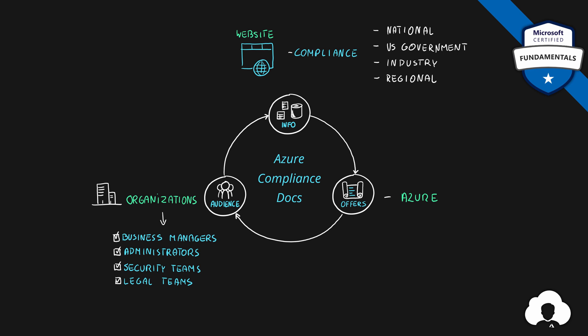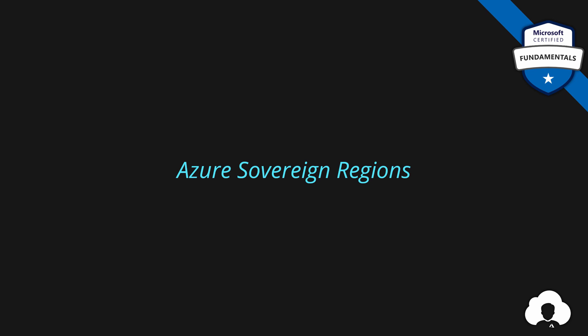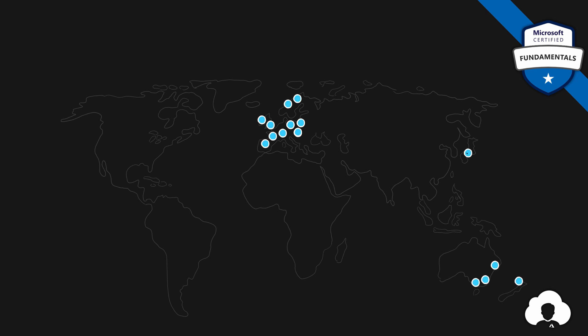Now that we know the key documents and websites for security, privacy, and compliance, we can move to another topic: Azure Sovereign Regions. In previous episodes, we talked about how there are plenty of regions spread across the globe — those are so-called public cloud regions, accessible from anywhere in the world and open to any customer. But besides those regions, there are some specific regions of Azure called sovereign regions. There are specific markets with specific compliance and security requirements, and in order to meet those requirements and provide Azure services, Microsoft decided to create these special sovereign regions.